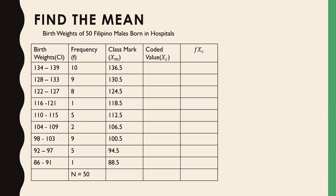Let's do the second example. This time we have birth weights of 50 male Filipinos born in a hospital, with 9 class intervals. Since there are 9, we place our assumed mean at the 5th row — the middle — so it has the coded value 0. Going upward: 1, 2, 3, 4. Going downward: negative 1, negative 2, negative 3, negative 4.